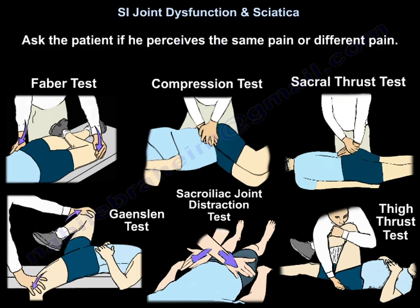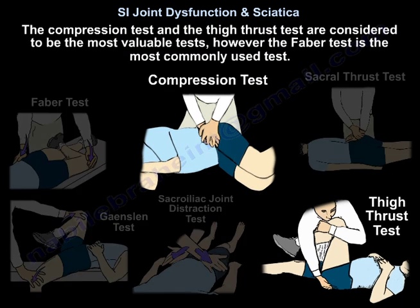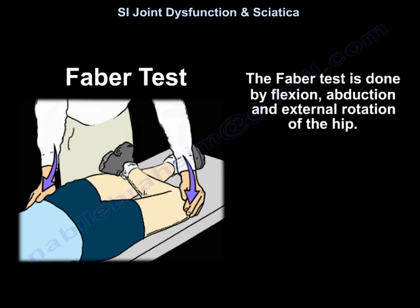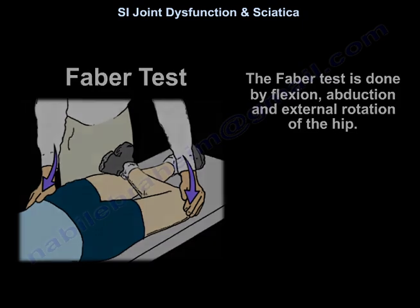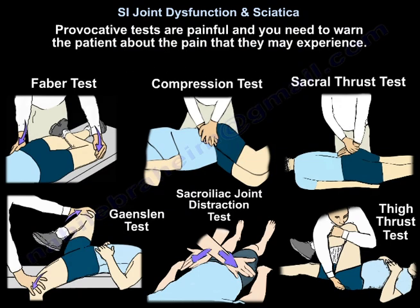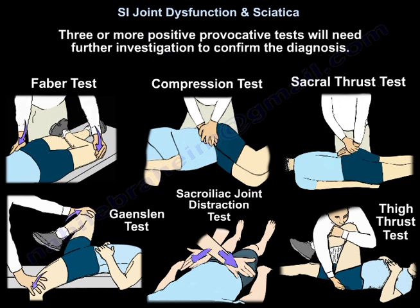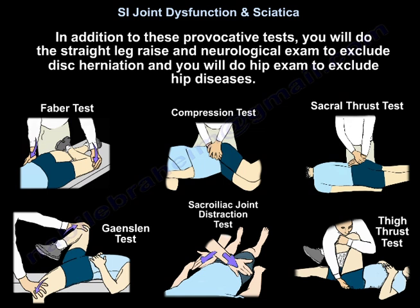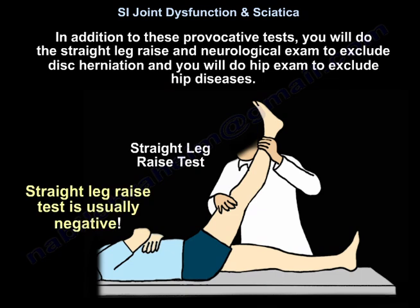Ask the patient if they perceive the same pain or a different pain. The compression test and the thigh thrust test are considered the most valuable tests. However, the FABER test is the most commonly used test. The FABER test is done by flexion, abduction, and external rotation of the hip. You will need three positive tests, and you should warn the patient that these tests may cause pain. In addition to these provocative tests, you will do a straight leg raise and neurological exam to exclude disc herniation, and a hip exam to exclude hip diseases.